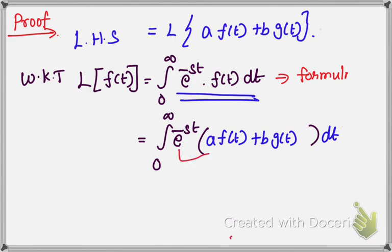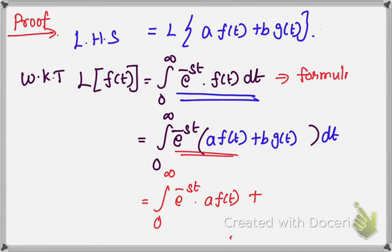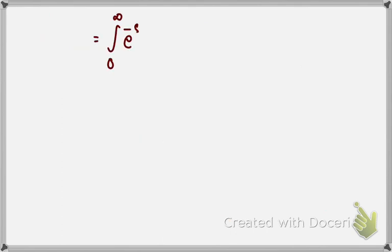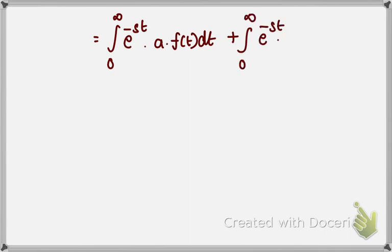Now you multiply this term inside. Multiplying e to the power minus s·t with the first term and second term, you get the integral from 0 to infinity of e to the power minus s·t times A·f(t), plus e to the power minus s·t times B·g(t), dt. Next, you split this into two separate terms with limits taken separately, giving: integral 0 to infinity of e to the power minus s·t times A·f(t) dt, plus integral 0 to infinity of e to the power minus s·t times B·g(t) dt.